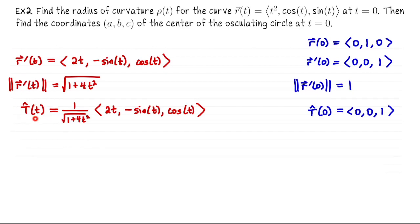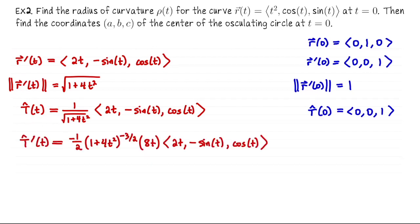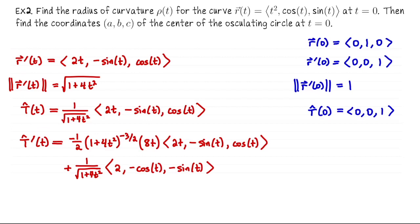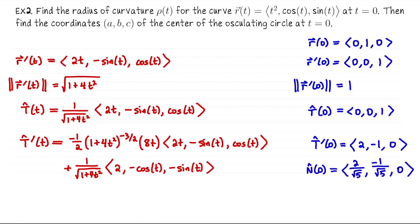Next we differentiate T-hat using the product rule. At t equals 0, the whole first term goes away, so T-hat prime at 0 is (2, -1, 0). The unit normal vector is a unit length version of this vector. The length of (2, -1, 0) is √5, so N-hat at t equals 0 is (2/√5, -1/√5, 0).